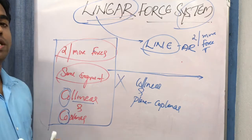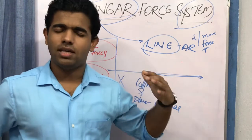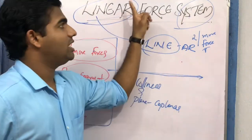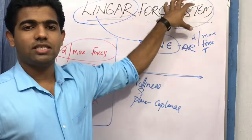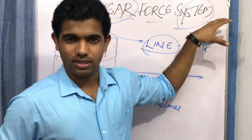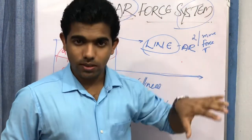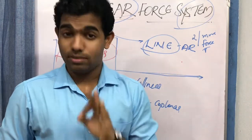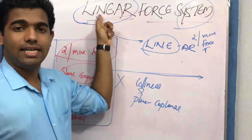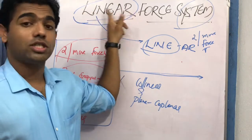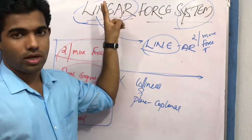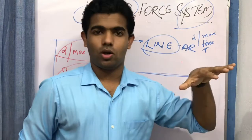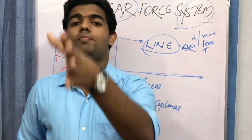To summarize the definition of the linear force system: two or more forces acting on the same segment that are collinear — meaning in the same line — and coplanar — meaning in the same plane — are considered to be part of the linear force system.